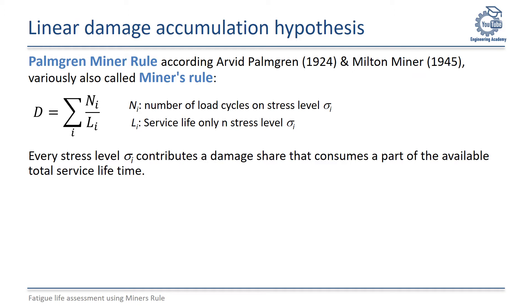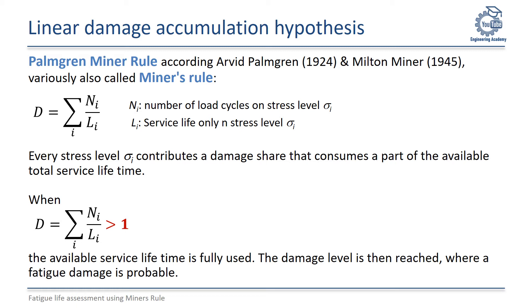What we just saw is a linear damage accumulation. For roller bearings, this hypothesis was developed by Swedish engineer Arvid Palmgren and American Milton Miner, and is therefore called the Palmgren-Miner Rule. For SN curves, it is also simply called Miner's Rule. It states that every load or stress level sigma i contributes a share of damage during operation, consuming a part of the available total service life. This share is calculated by setting the number of load cycles Ni in relation to the sole service life Li at that stress level. The sum of all single damages is the total damage D. If D reaches or exceeds 1, the available lifetime has been used up and fatigue damage is probable.